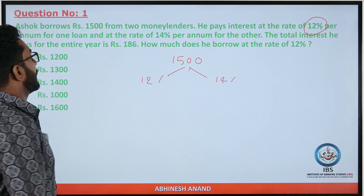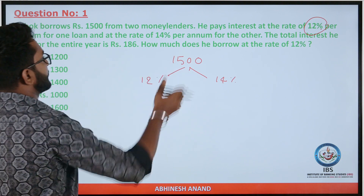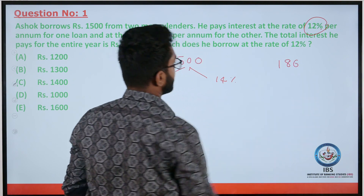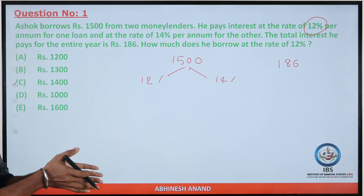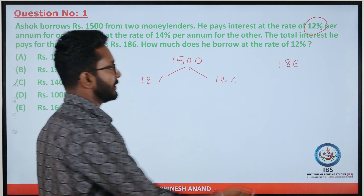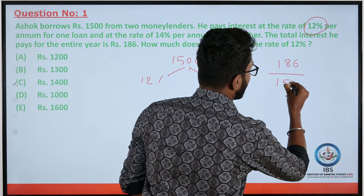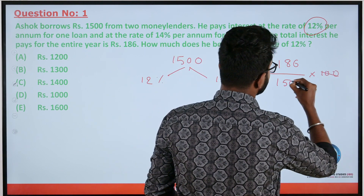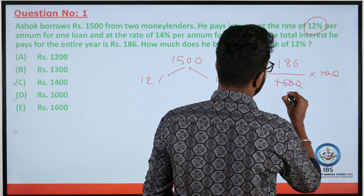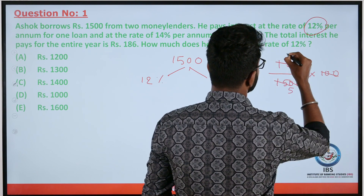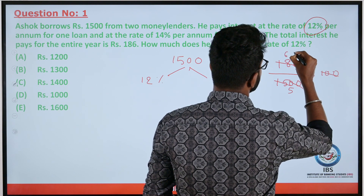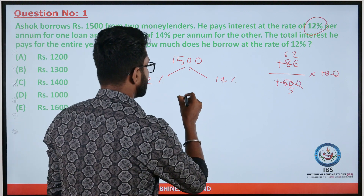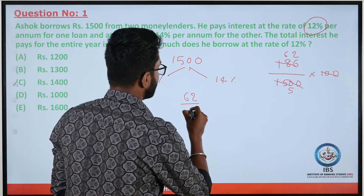The total rate of interest is equal to 186 divided by 1500 into 100, which gives us 62 by 5 as the total rate of interest.